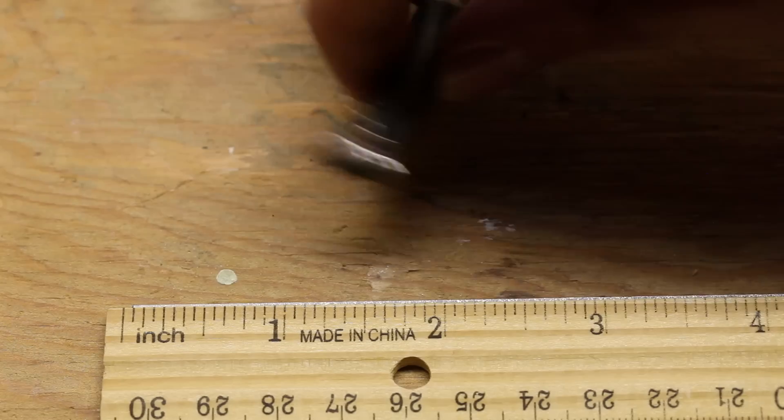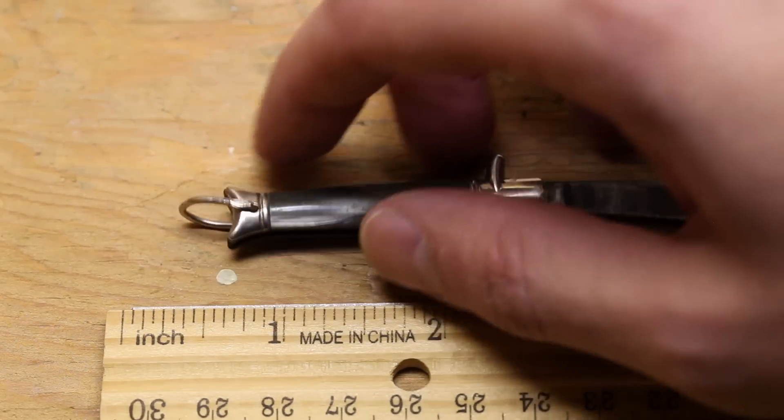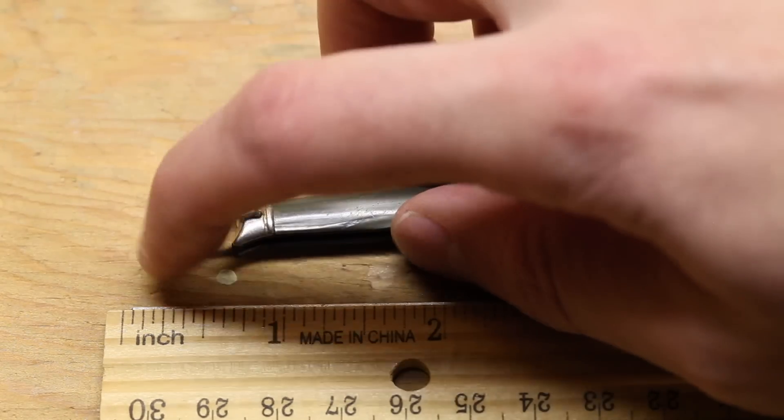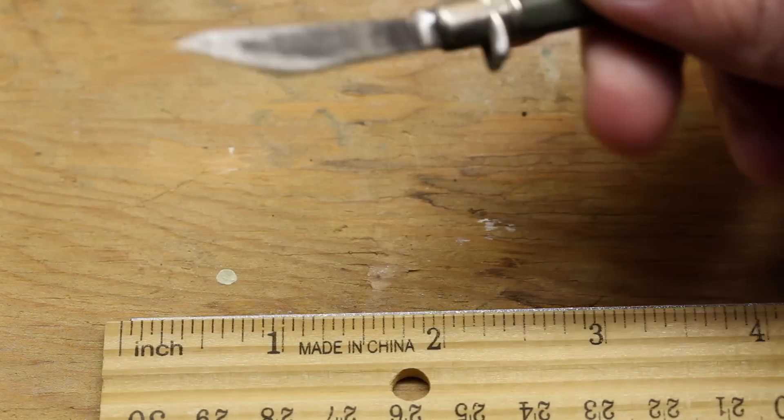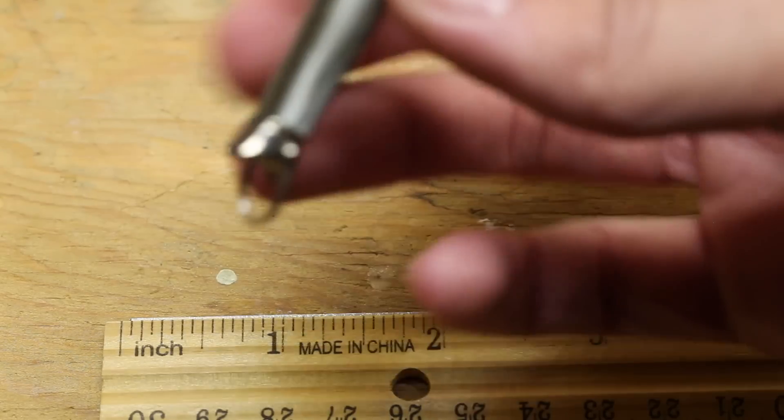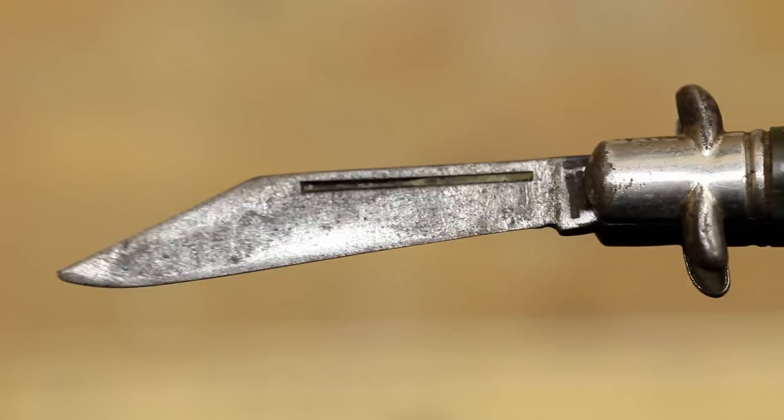And then it has a little metal lanyard, I guess you could put it to your car keys or whatever, a little chain. But a super tiny knife, seems to be pretty old and unfortunately no discernible markings on it.